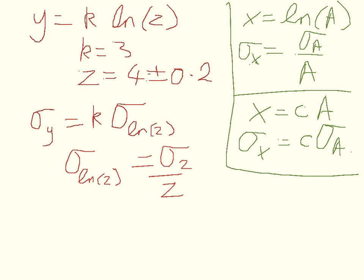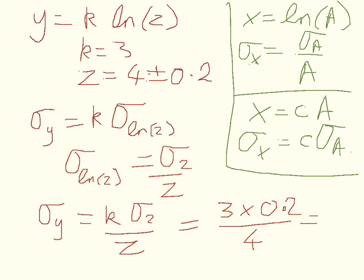So put them together, and we get the standard deviation in y is k standard deviation in z over z. So this case is equal to k, which is 3 times 0.2 over 4, which is 0.15.